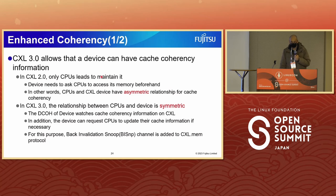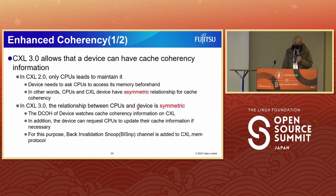The next feature is enhanced coherency. CXL 3.0 allows a device to have cache coherency information directly. In CXL 2.0, only the CPU maintains cache coherency — devices need to ask CPUs to access their memory beforehand, meaning CPUs and CXL devices have an asymmetric relationship. In CXL 3.0, the relationship between CPUs and devices is symmetric. The DCOH of the device watches cache coherency information on CXL and can request CPUs to update their cache information if necessary. For this purpose, a back-invalidation snoop channel, BISNP, is added to the CXL-MEM protocol.